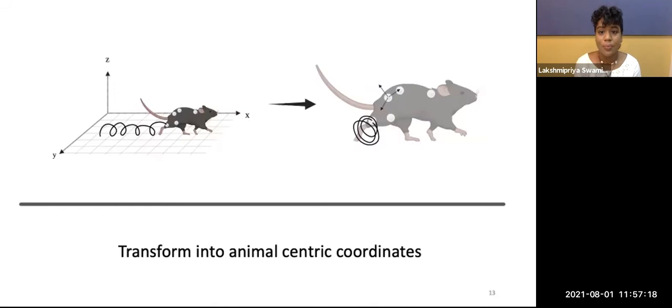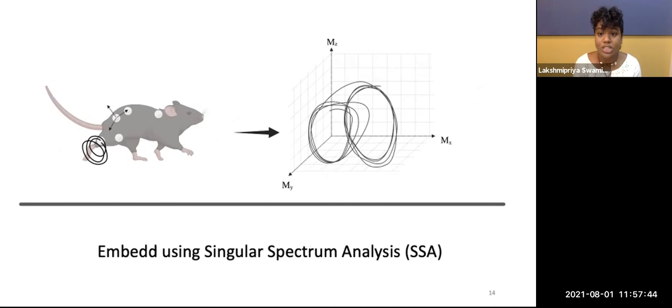I make use of tools from dynamical systems theory to quantify the variability of these movements. I first transform the 3D movement trajectories into an animal-centric coordinate system. This is depicted in the schematic here on the slide. I then embed these movements by making use of the singular spectrum analysis method of embedding, which uses windowed principal component analyses to embed the trajectories. This provides me with the right coordinate system to visualize the movement trajectories.